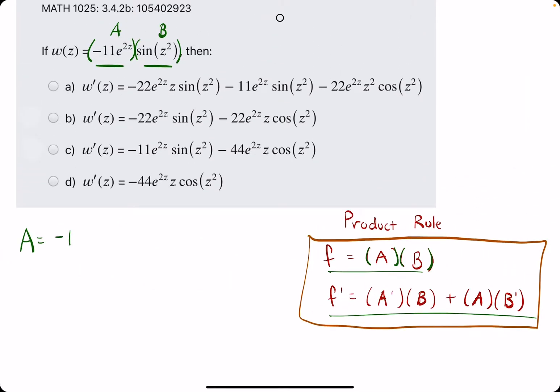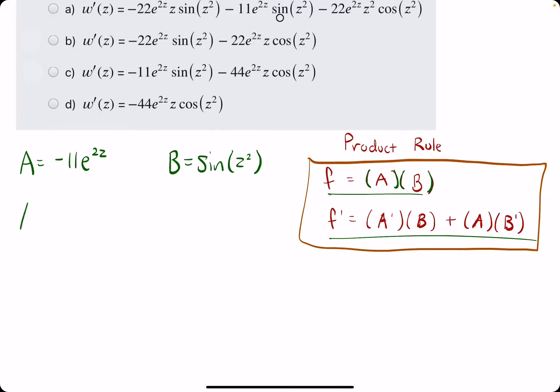Again, we know that A is that first half, that first Z term. We know that B is the second half, the other Z term. And what we need are A prime and B prime, the derivatives of each of these.